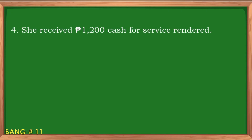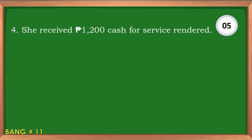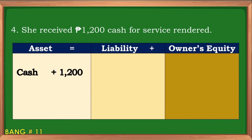Number four: She received 1,200 pesos cash for service rendered. The answer is: increase in cash, 1,200 pesos, and increase in service revenue, 1,200 pesos.